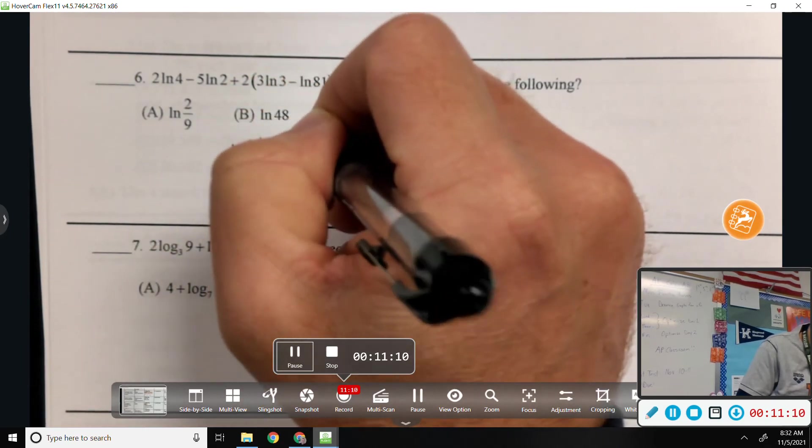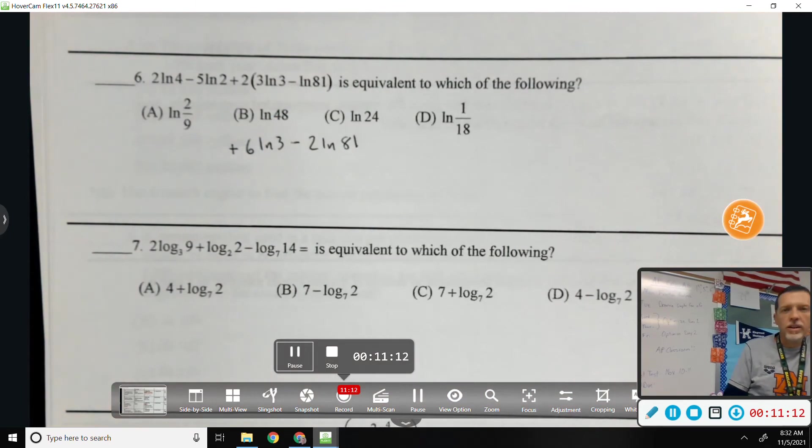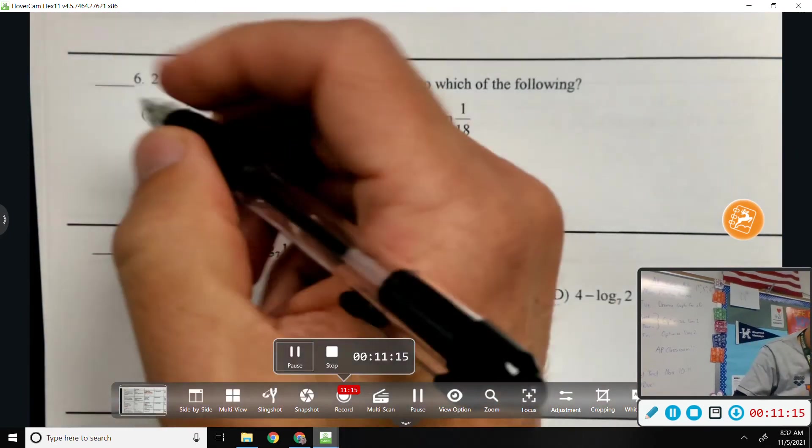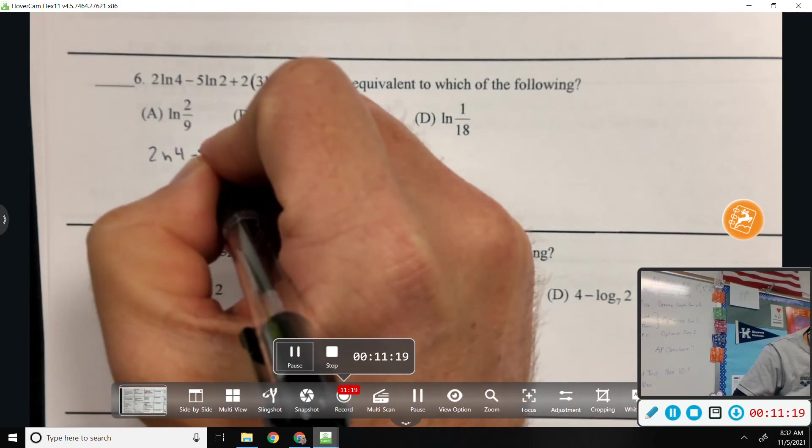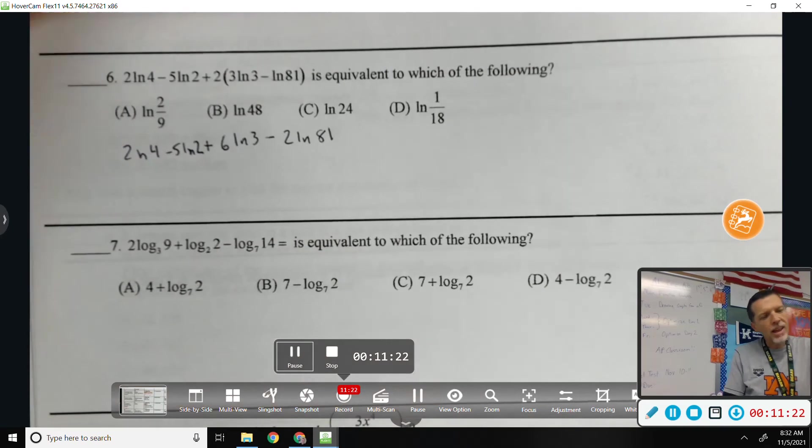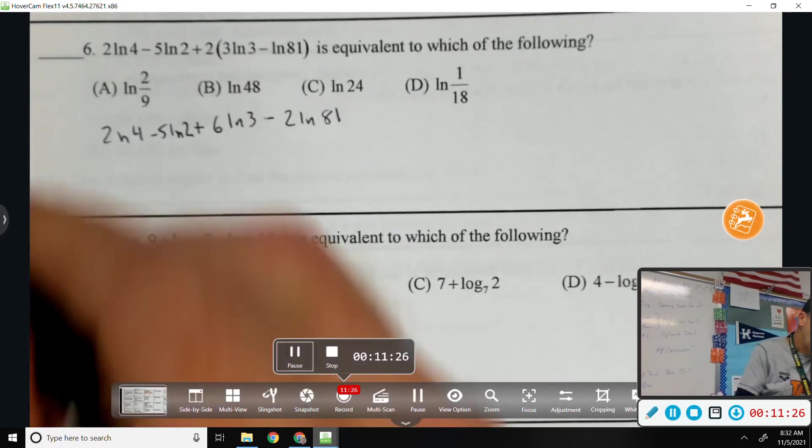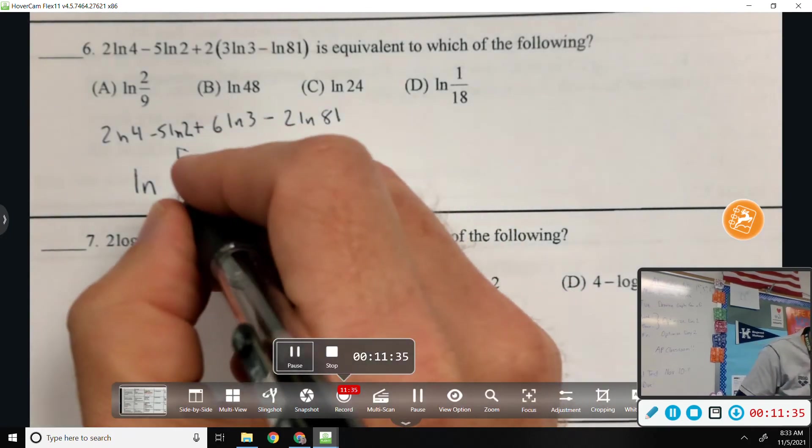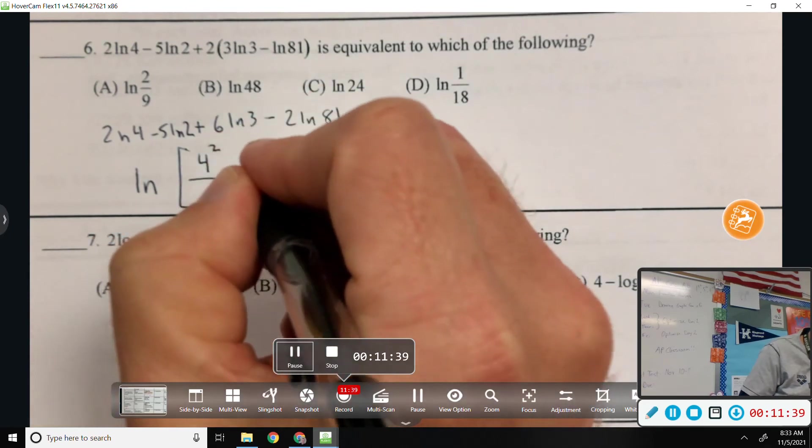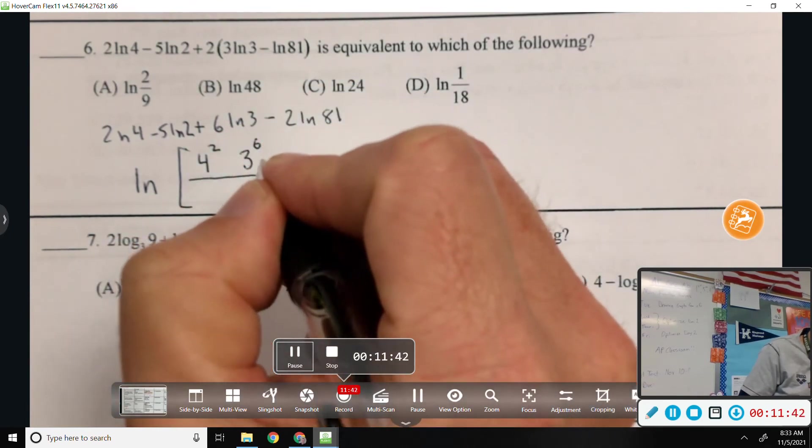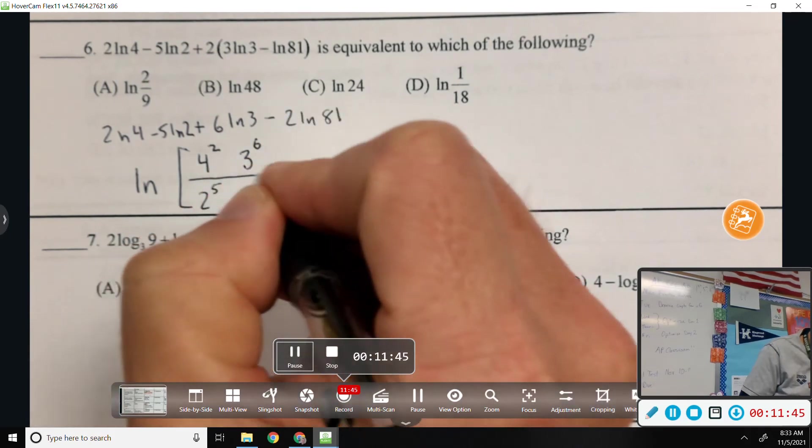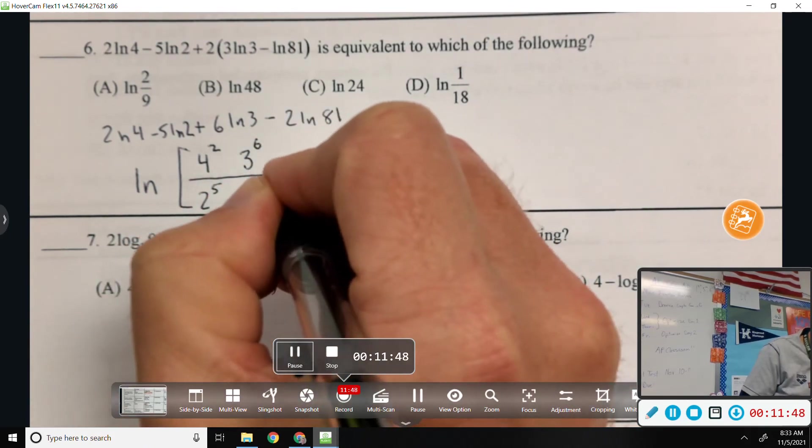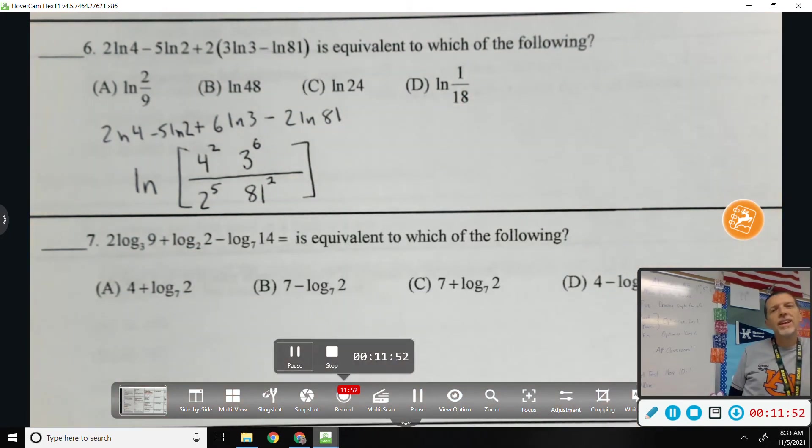Let's see. Oh, this parentheses business has me concerned. I think I'll distribute the two. That's probably the easiest way. It just goes to the outside one. Right. It goes to the... So it's six... Three... Two... All right. Now, I think maybe we've done enough of these where I can jump to the one natural log. Anything positive is going to be multiplied and in the top. Anything negative is going to be divided in the bottom. So, four squared in the top, three to the sixth in the top, two to the fifth in the bottom, eighty-one squared in the bottom.